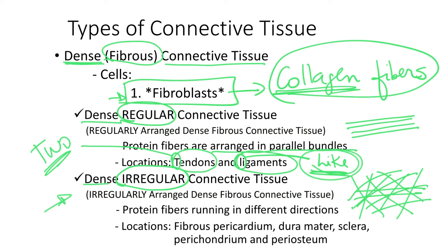Dense irregular connective tissue has fibers running in all different directions, forming sheets. It surrounds our brain, making up the dura mater. It makes up the whites of our eyes, anatomically called the sclera. It also makes up the fibrous pericardium, the fibrous layer surrounding the heart. Additionally, it forms a protective covering around cartilage called the perichondrium — since 'chondral' means cartilage and 'peri' means around — and around bone, called the periosteum.